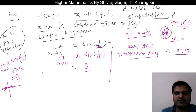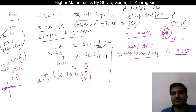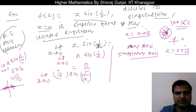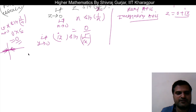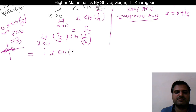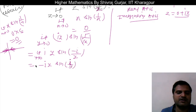Let us approach along the imaginary axis: let z = iy and take the limit as y tends to 0. Then z·sin(1/z) becomes iy·sin(1/(iy)). Now 1/(iy) equals -i/y, so we have the limit as y tends to 0 of iy·sin(-i/y), which can be rewritten as limit y tends to 0 of -iy·sin(i/y) divided by... that is, iota y times sin(iota divided by y).